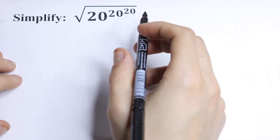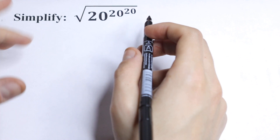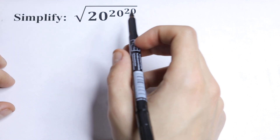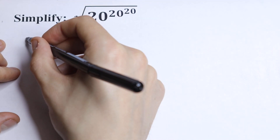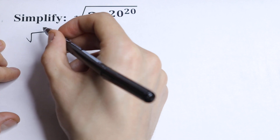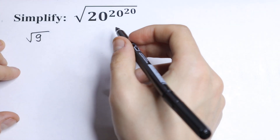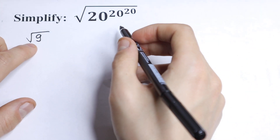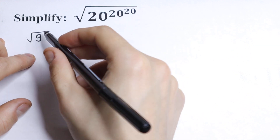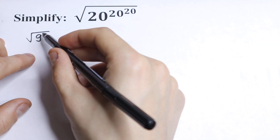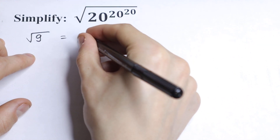So let's try to simplify this a little bit. First of all, what does this square root sign do? For example, if we have the square root of 9, so we have 9 to the power one-half.